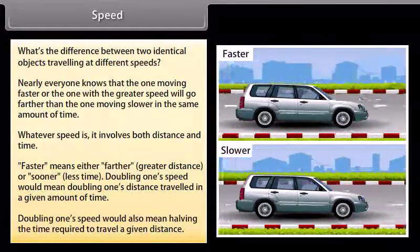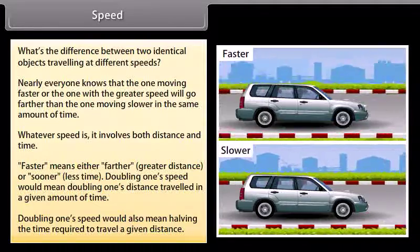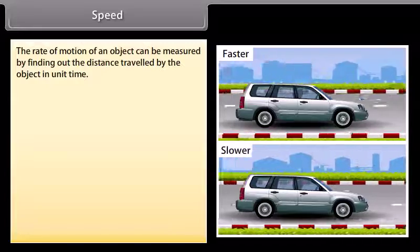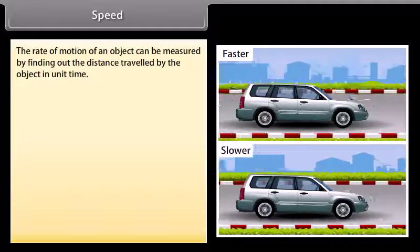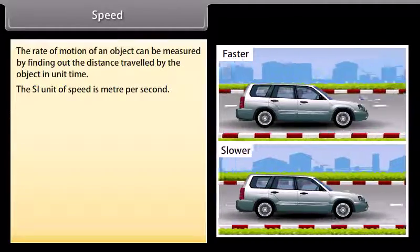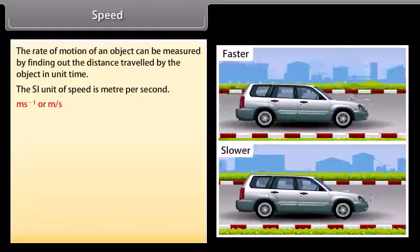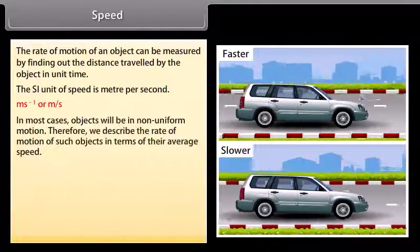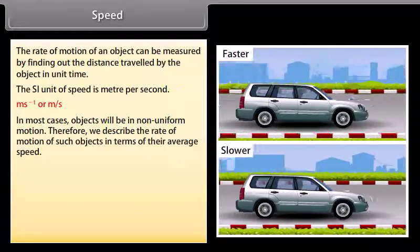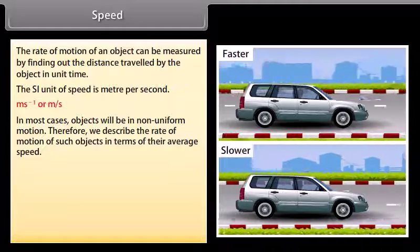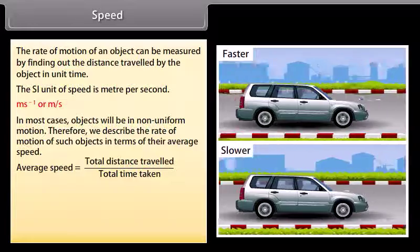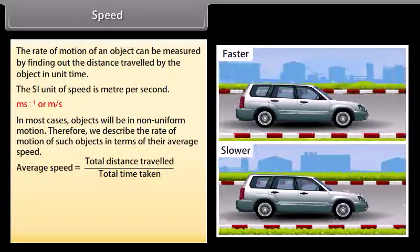Doubling one's speed would also mean halving the time required to travel a given distance. The rate of motion of an object can be measured by finding out the distance travelled by the object in unit time. The SI unit of speed is meters per second. In most cases, objects will be in non-uniform motion, so we describe the rate of motion of such objects in terms of their average speed. The average speed of an object is obtained by dividing the total distance travelled by the total time taken.